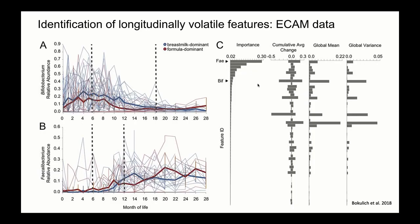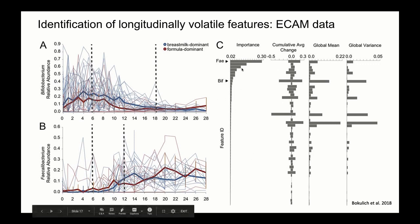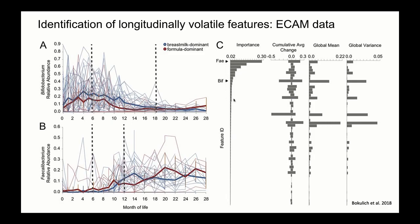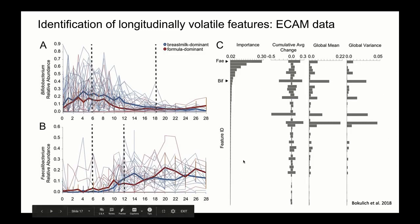Let's take a closer look at the utility of the feature volatility action as applied to the ECAM data. This tool can be used to examine which bacterial genera are associated with early gut microbiome development and delivery mode. Using 71 features to train the model, only a handful of features account for a majority of the total feature importance — as we can see in the importance column, only a handful of taxa are actually contributing high importance values. After evaluating model accuracy and assessing feature importance, the authors chose to focus on Bifidobacterium and Faecalibacterium, seen in panels A and B respectively, due to their high importance values, mean abundance, and cumulative average change.